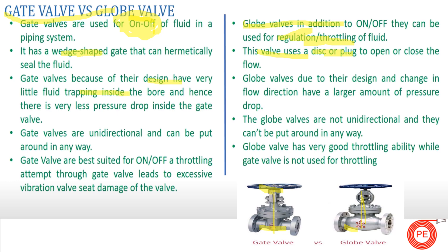Gate valves have very little fluid trapping inside the body and hence very less pressure drop. When the wedge is in the open or upward position, the gate valve has a clear passage of fluid and the diameter inside is similar to the diameter of the pipe — hence there is negligible pressure drop across the gate valve. In globe valves, there is a change in direction of fluid, so the pressure drop is on the larger side compared to gate valves.